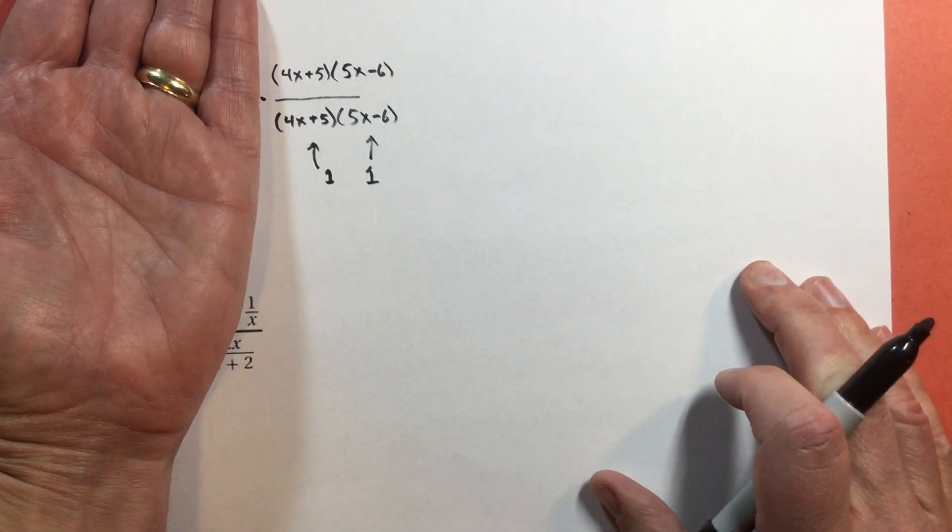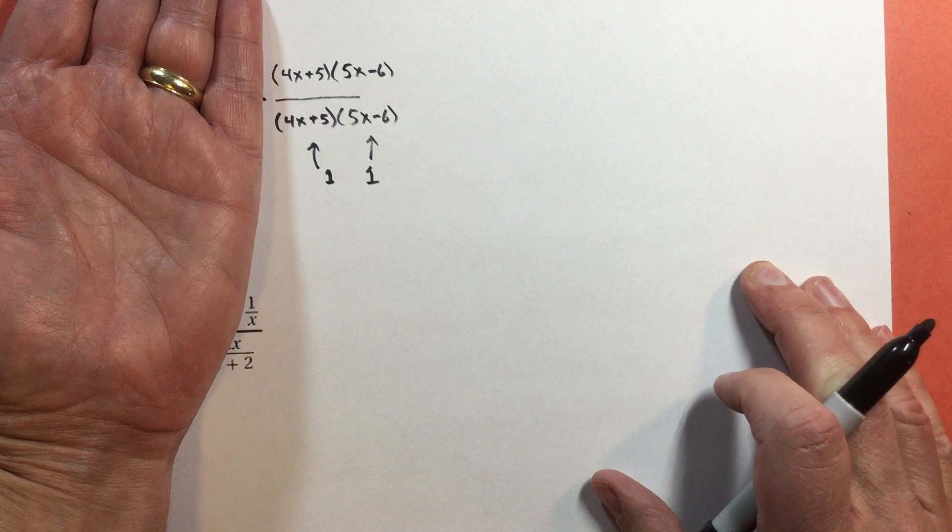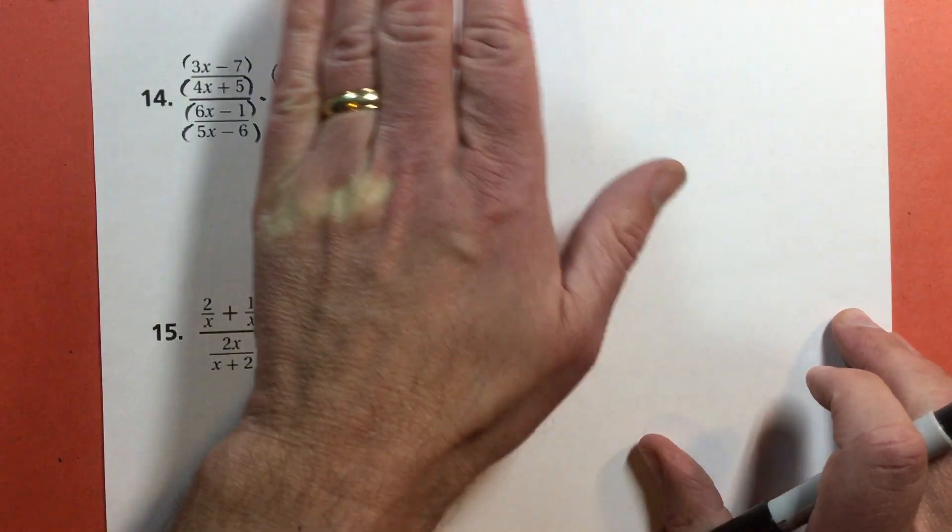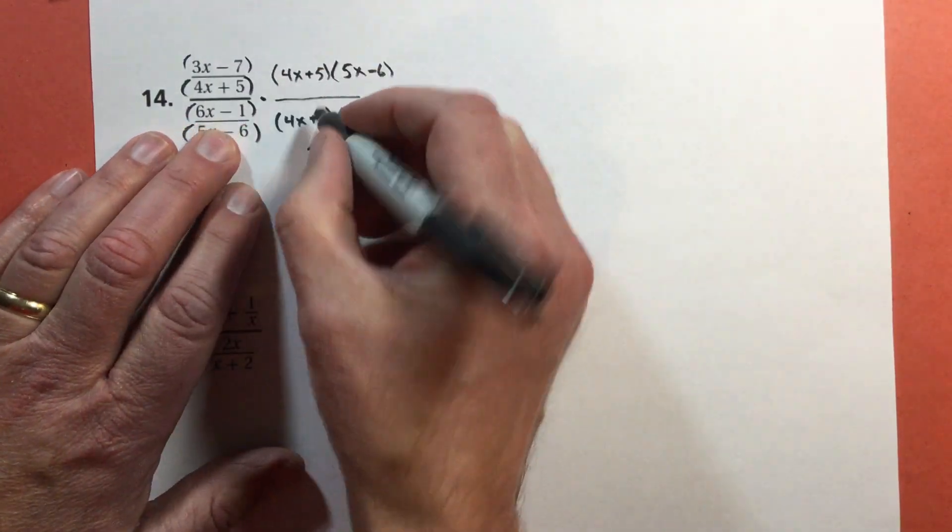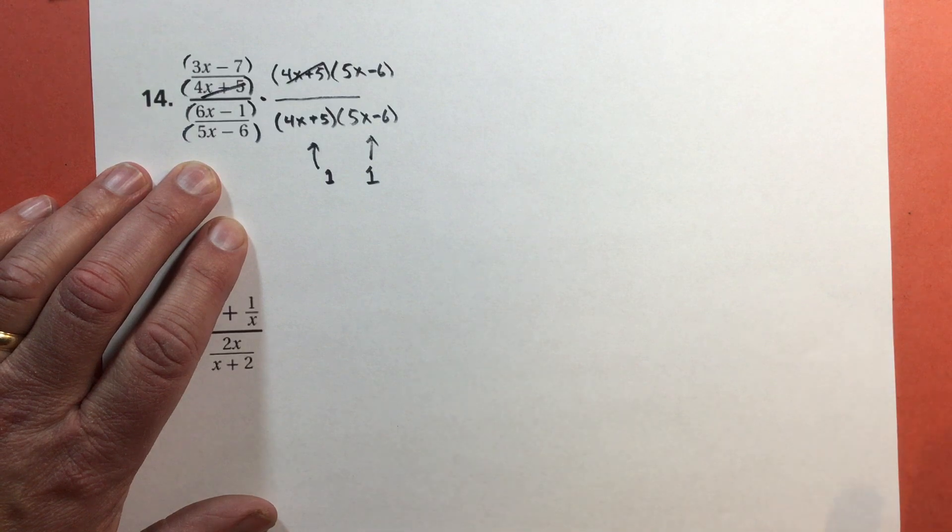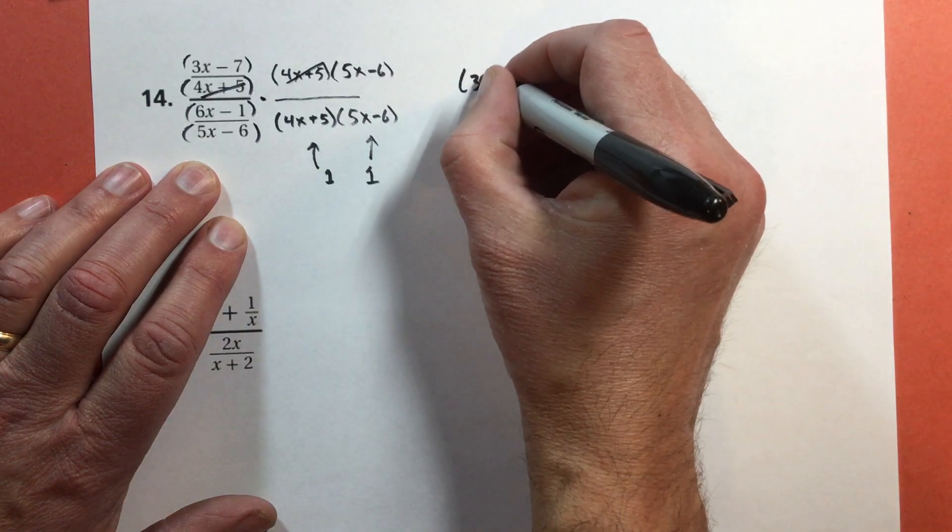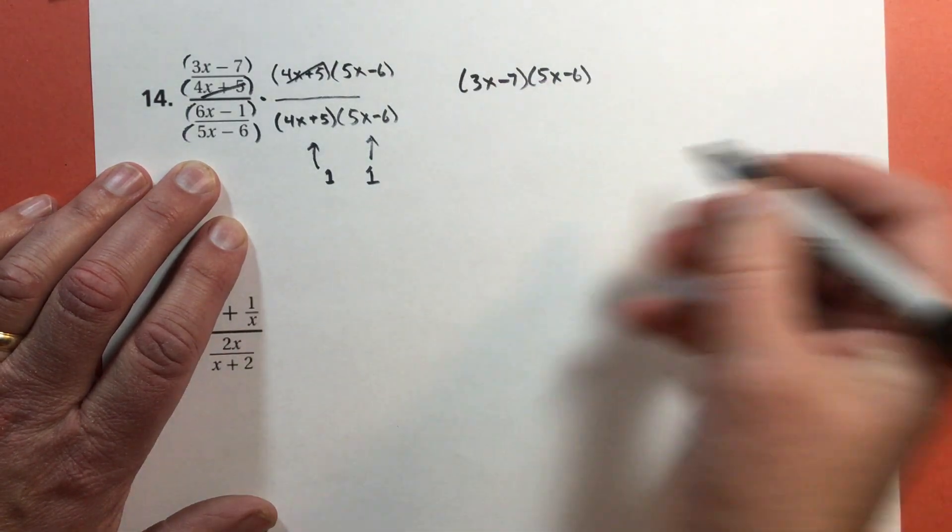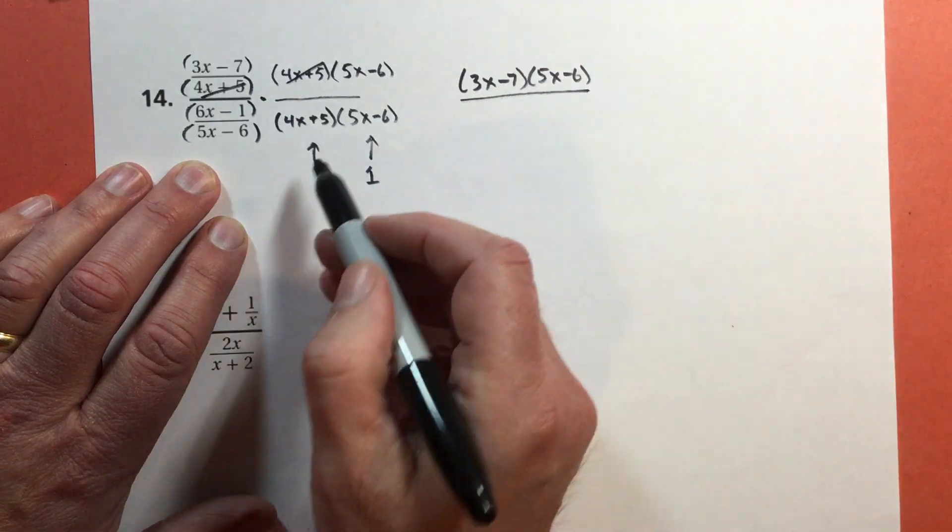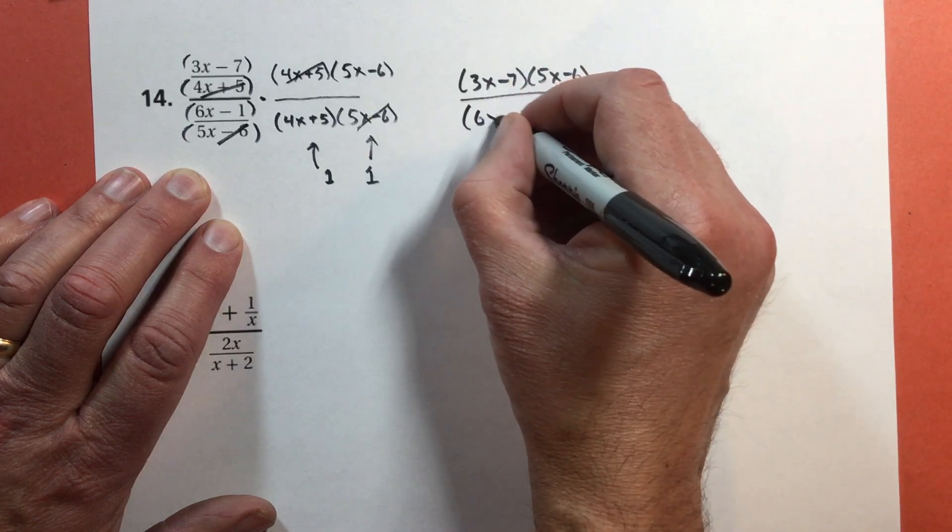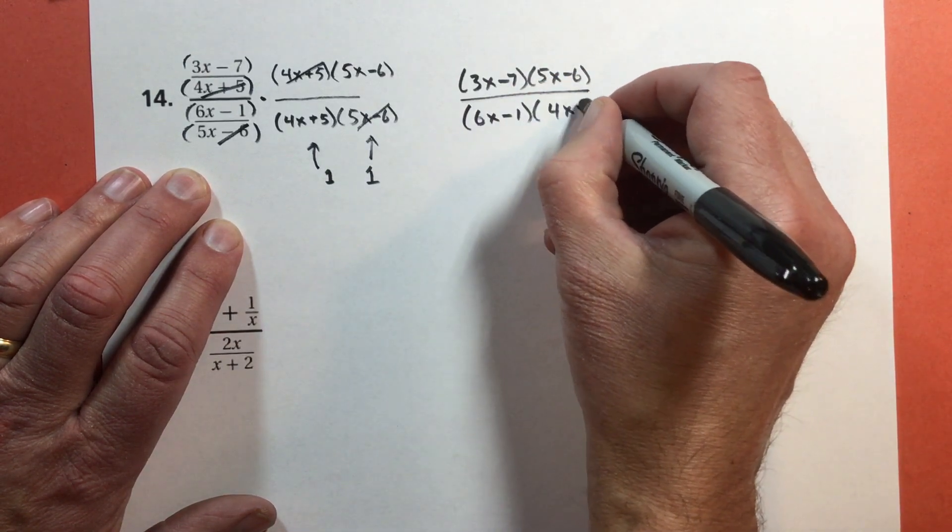Now look at this. The top is the same as the bottom, so again, I'm just multiplying by 1. It doesn't look like 1, so it's not going to look the same, but it will have the same value. The 4x plus 5 is going to make the 4x plus 5 reduce, and I get 3x subtract 7 times 5x subtract 6. In the denominator, the 5x minus 6 are going to cancel, and I get 6x minus 1 times 4x plus 5.